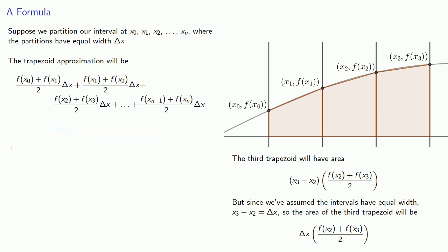Now, since every one of these areas has a one-half delta x in common, we can factor it out and get the sum of the components.